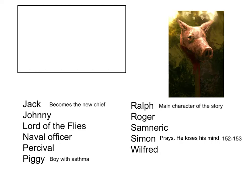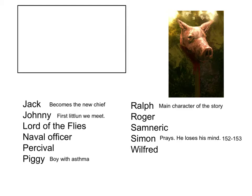Johnny is the first little one we meet. It's not too important a character, but it is important that he's the first and is seen several times throughout the story. When we first see him, we notice his pink thumb — and remember, pink is associated with innocence. The Lord of the Flies is himself an allusion to the devil, Beelzebub. He's a pig's head on a stick, and all that remains at the end of the story is like a skull on a stick.